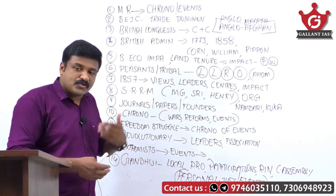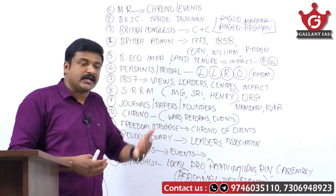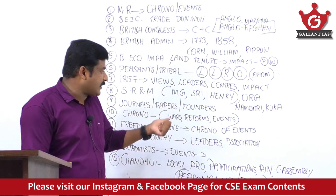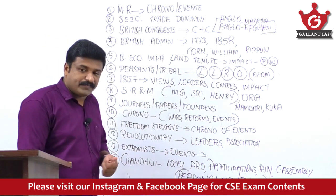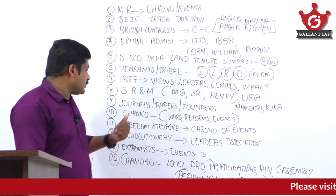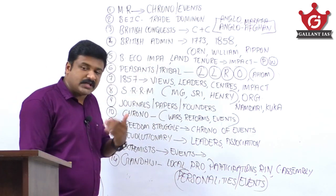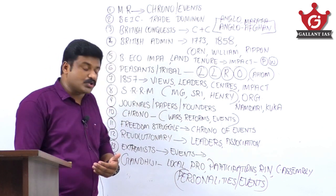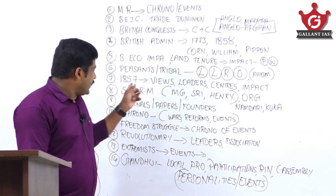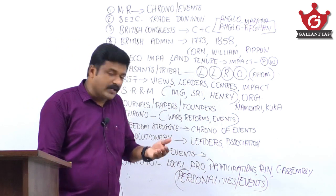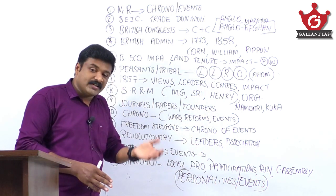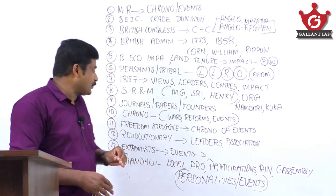Socio-religious reform movements are important — study Raja Ram Mohan Roy, Swami Dayanand Saraswati, and many others: Arya Samaj, Brahmo Samaj, Prarthana Samaj, Theosophical Society, Aligarh Movement. Focus on the contributions of Ishwar Chandra Vidyasagar, M.G. Ranade, Sree Narayana Guru, and Henry Vivian Derozio. Know the various reform organizations, journals, and papers of the 19th and 20th centuries — their founders and editors. The Namdhari and Kuka movements are very important.